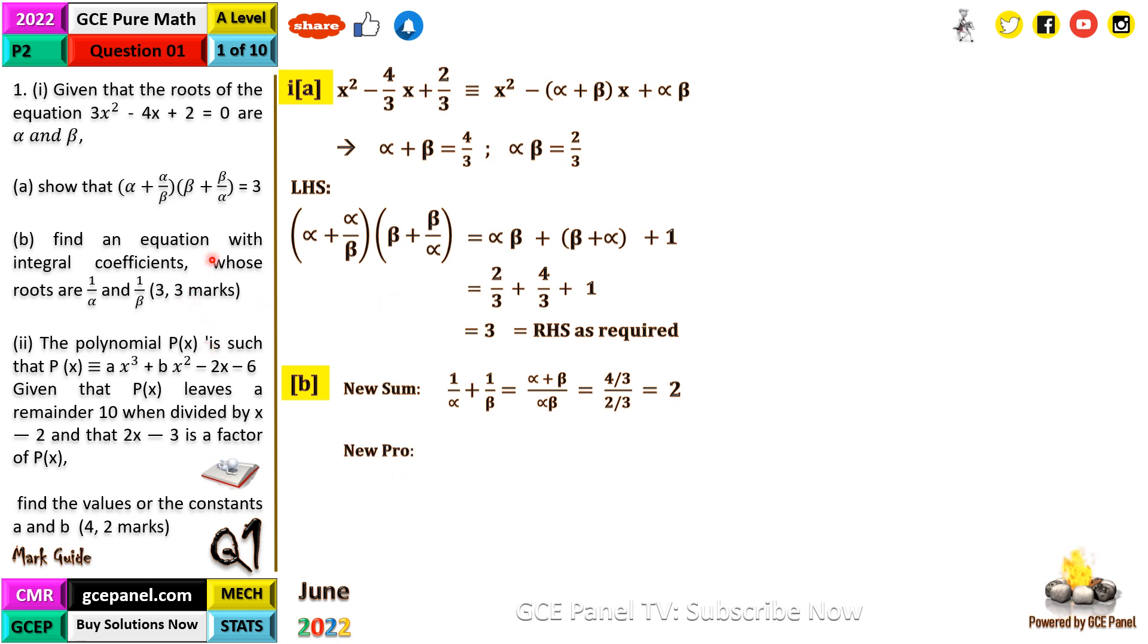The new product will be 1/α × 1/β = 1/αβ. Since αβ = 2/3, that gives us 3/2. Our new equation will be x² minus sum of roots x plus product. We have x² - 2x + 3/2 = 0. Multiplying all through by 2, we get 2x² - 4x + 3 = 0.